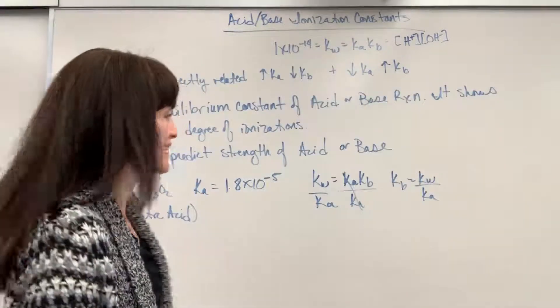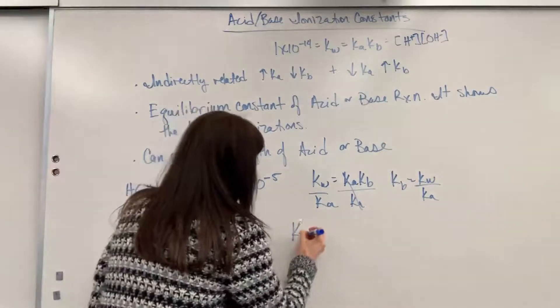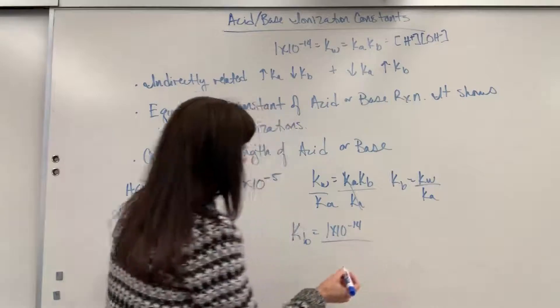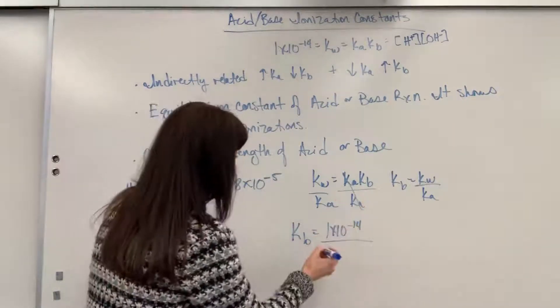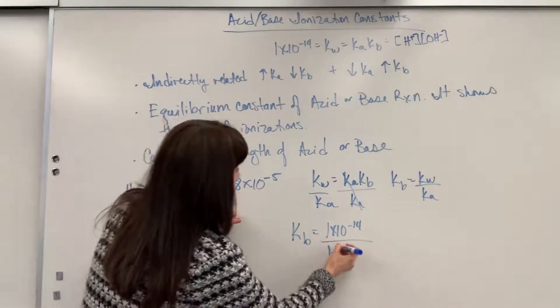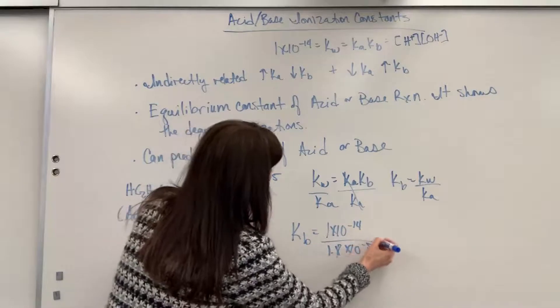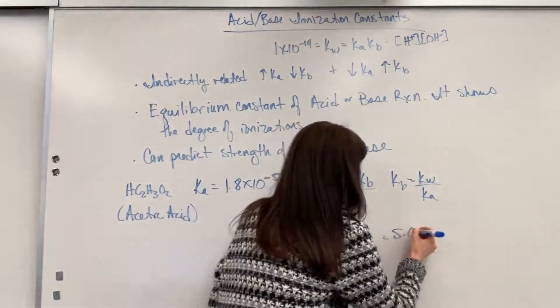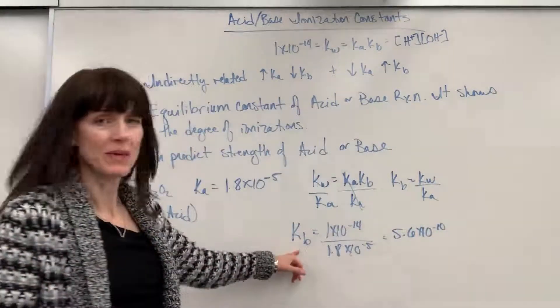All right, so now we can just plug in the numbers. We will have Kb equals 1 times 10 to the minus 14 divided by the Ka, which was the 1.8 times 10 to the minus 5. So we do that math and we end up with 5.6 times 10 to the minus 10 is the Kb.